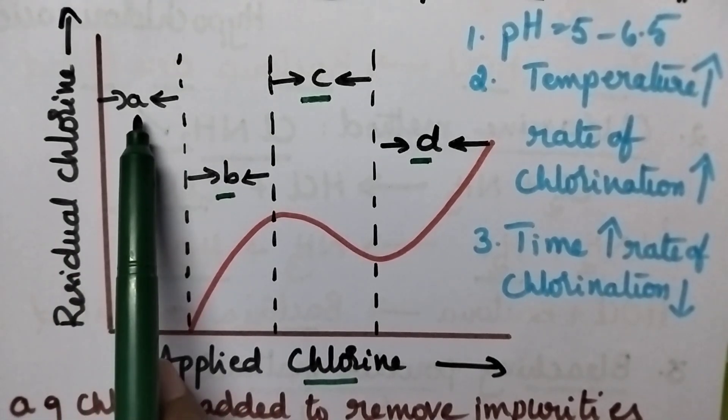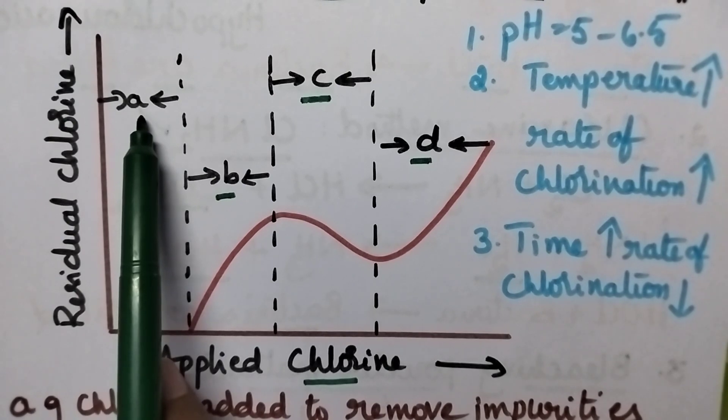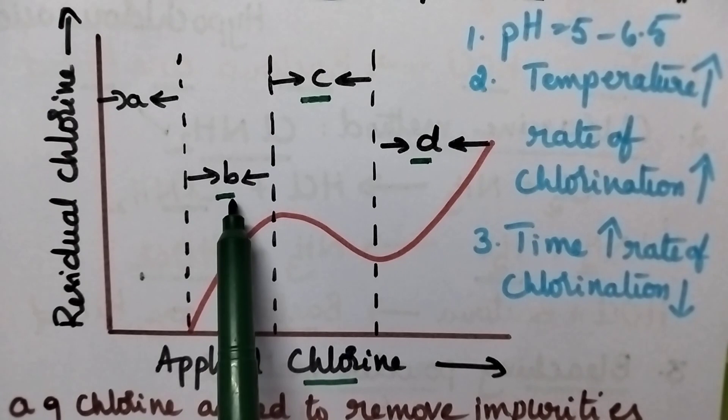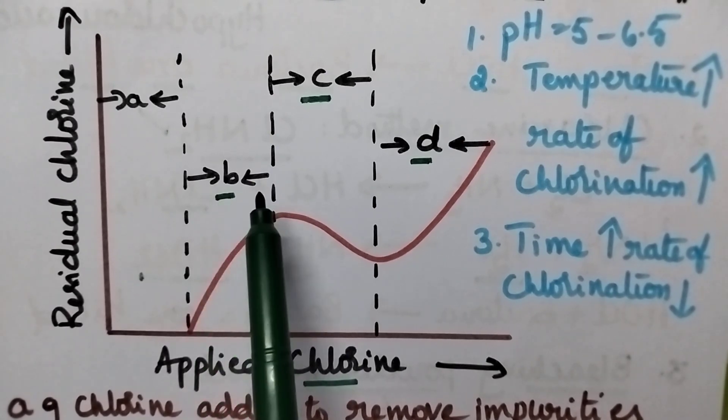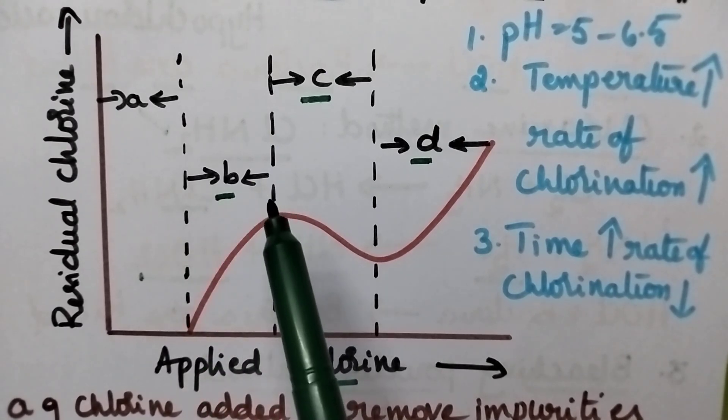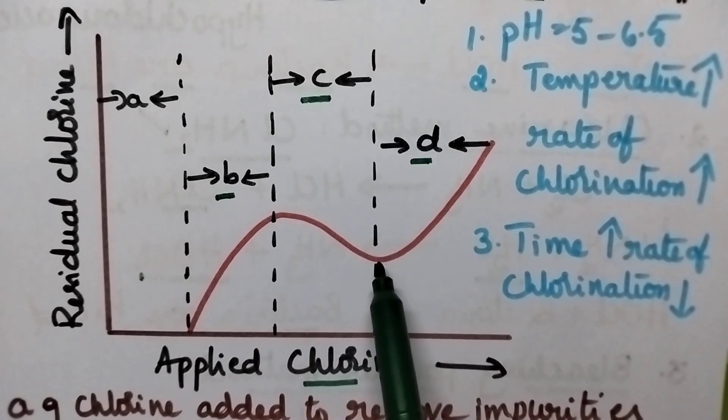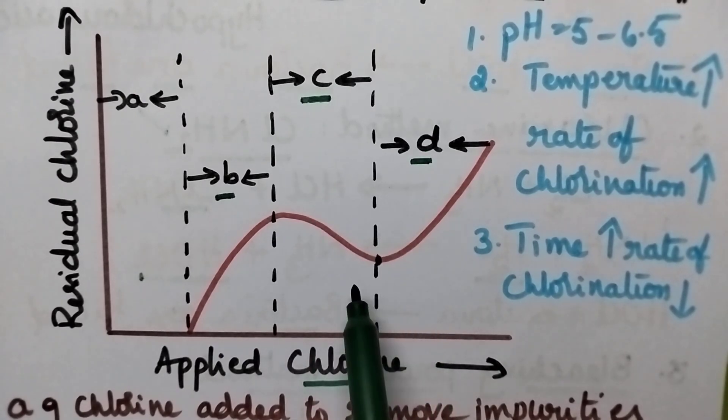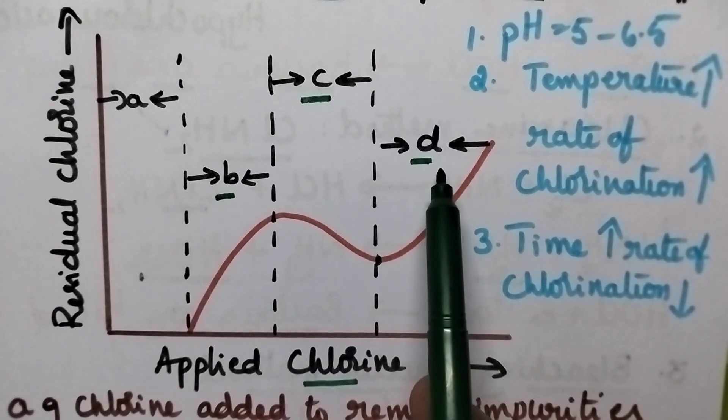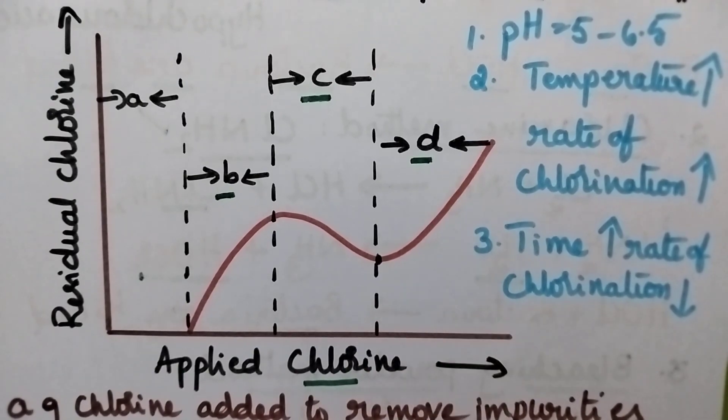A grams of chlorine is required to remove the organic matter from the water. B grams of chlorine is required to form other chloro compounds like chloramines. C grams of chlorine is required to kill the bacteria. D is the excess chlorine present in the water.